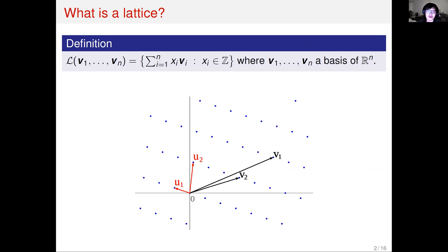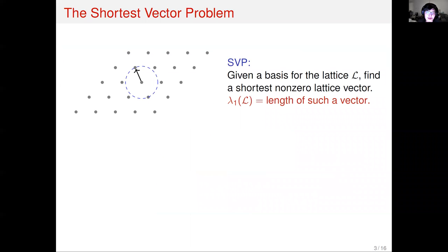The most natural question for a lattice is to ask to find the short lattice point. We can define the following problem — that is, the shortest vector problem. The shortest vector problem, or SVP, is to output the shortest non-zero lattice vector. We will denote lambda_1 as the length of such a vector.